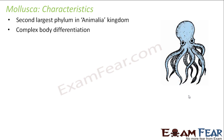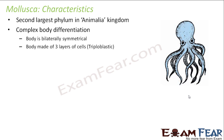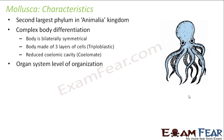They have complex body differentiation. The body is bilaterally symmetrical, triploblastic — with ectoderm, endoderm, and mesoderm germ layers. They have a reduced coelomic cavity, meaning they are coelomate, so a true coelom is present. They have organ system level of organization because they have complete and distinct organ systems.